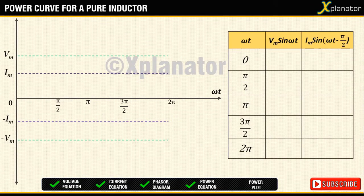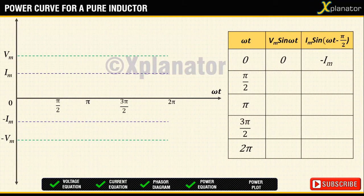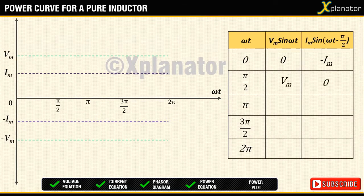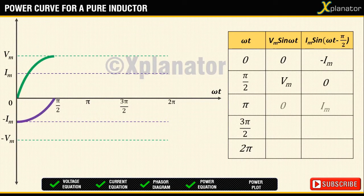Tabulate the different values of voltage and current at different intervals of ωt and draw the corresponding points, i.e., 0, π by 2, π, 3π by 2 and 2π.